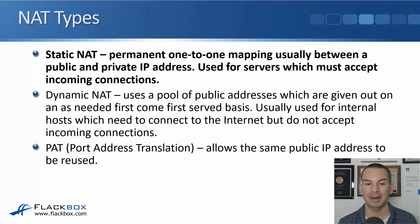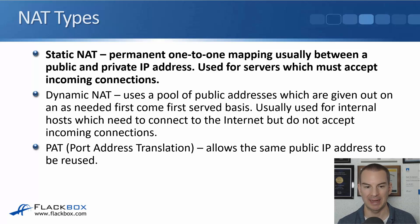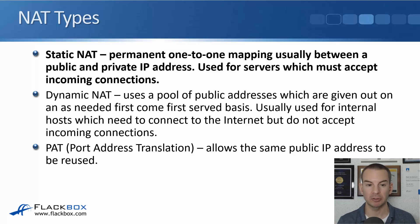The next type is Dynamic NAT. That uses a pool of public addresses which are given out on an as-needed, first-come, first-served basis. These are usually used for internal hosts which need to connect out to the internet, but they don't accept incoming connections. And the last NAT type is PAT, Port Address Translation, which allows the same public IP address to be reused. We're going to be covering Dynamic NAT and PAT in detail later on in this section.